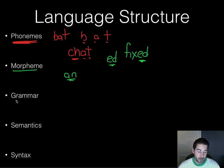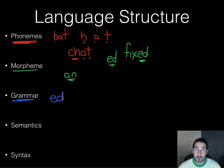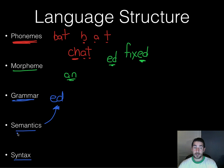Moving on to grammar — these are the rules for sounds. For example, grammar says that putting 'ed' at the end of a word makes it past tense. Grammar comes down to semantics and syntax. Semantics refers to the rules for the meaning of words — like adding 'ed' to the end of a word makes it past tense.